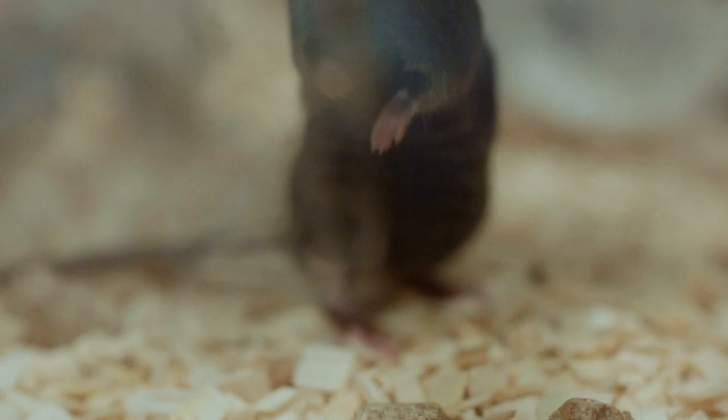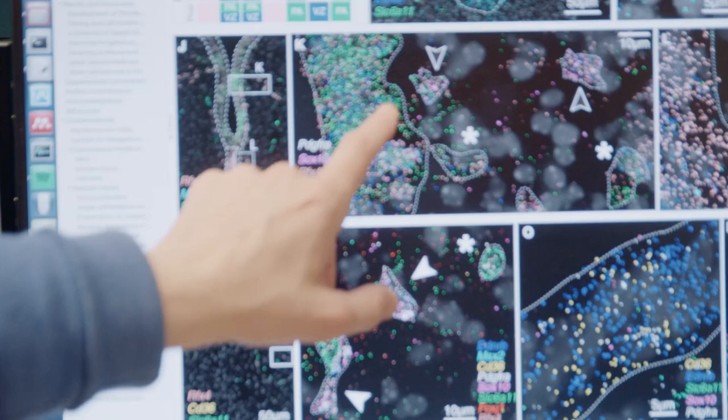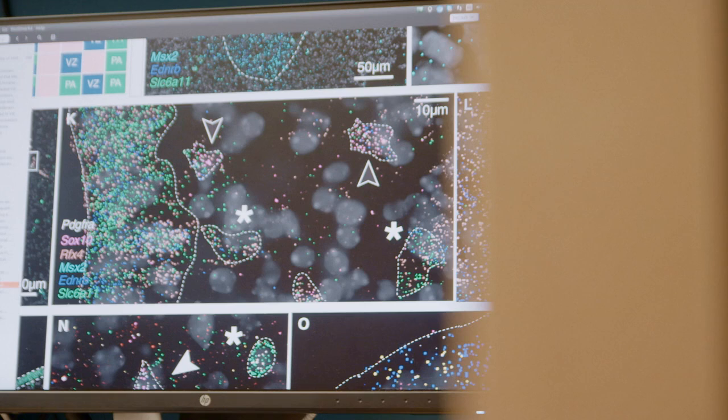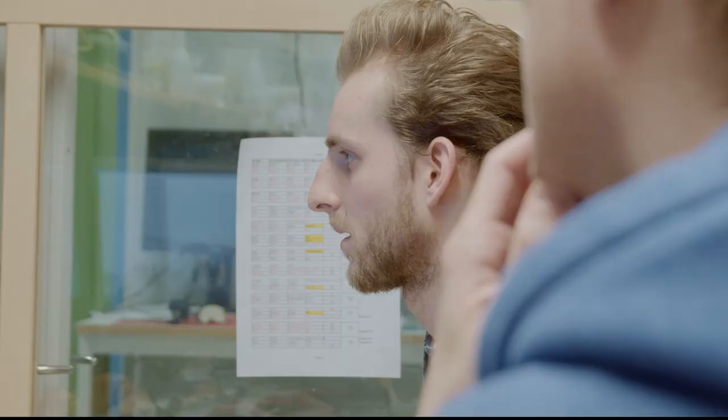So here we're looking at a part of the brain. The colors here show you cells that have been detected. The small dots represent the different parts of the DNA code that cells use. And a specific mix of dots then forms its own cell type.